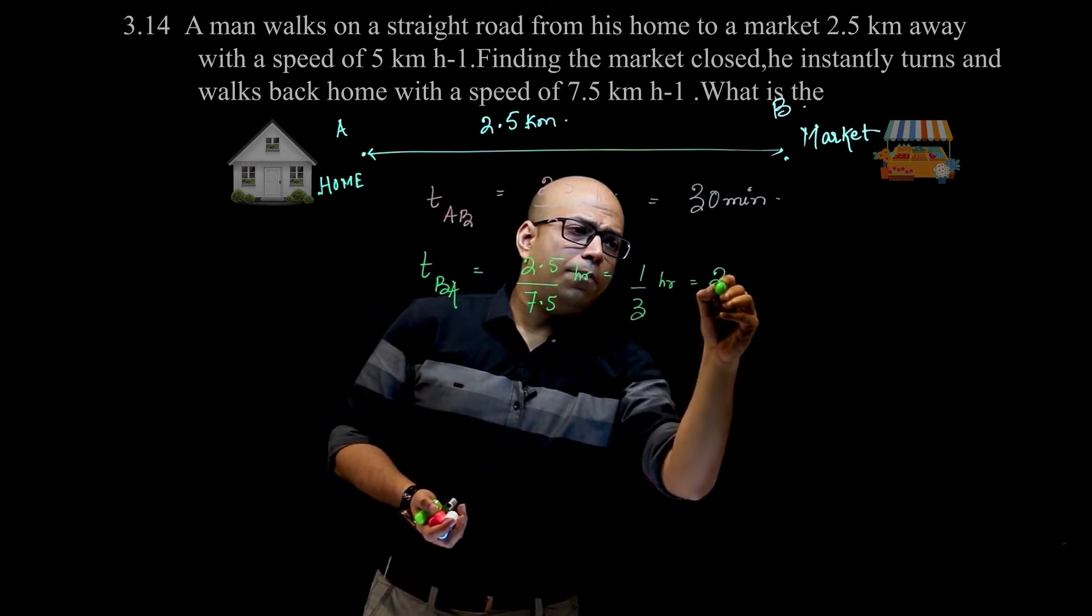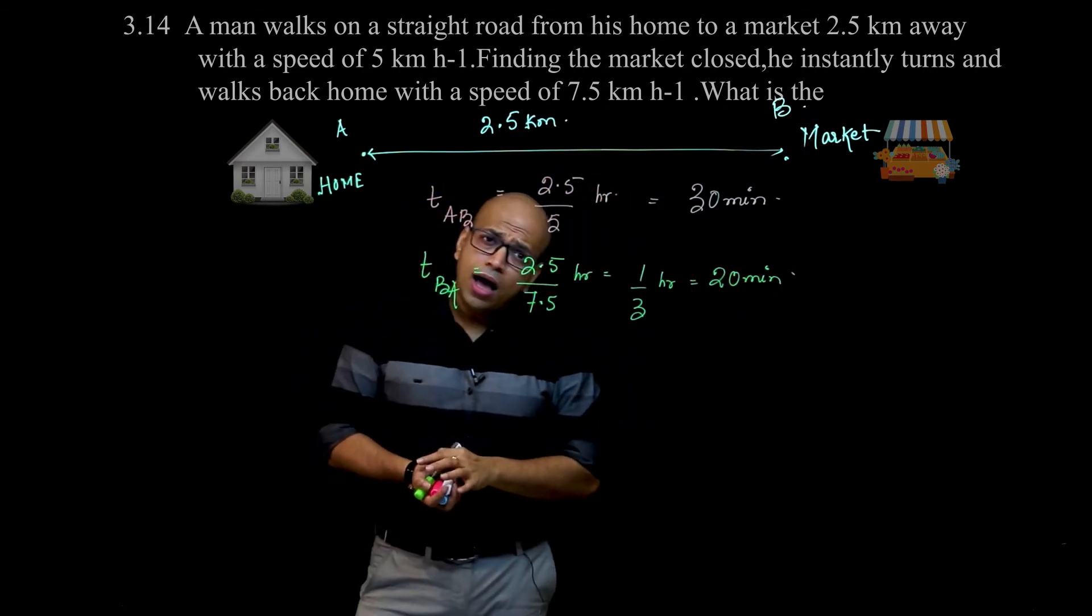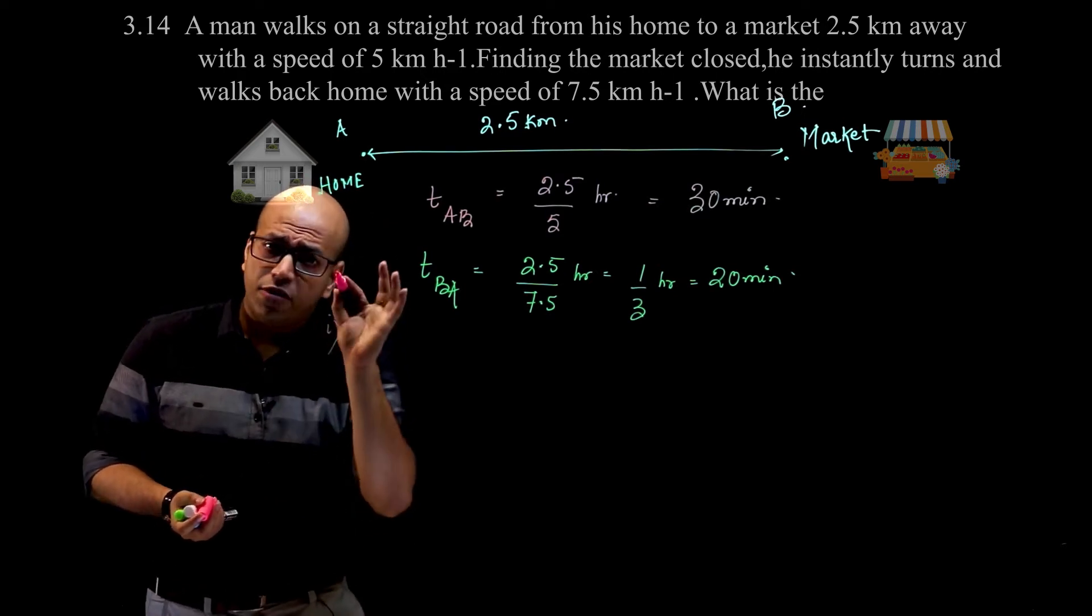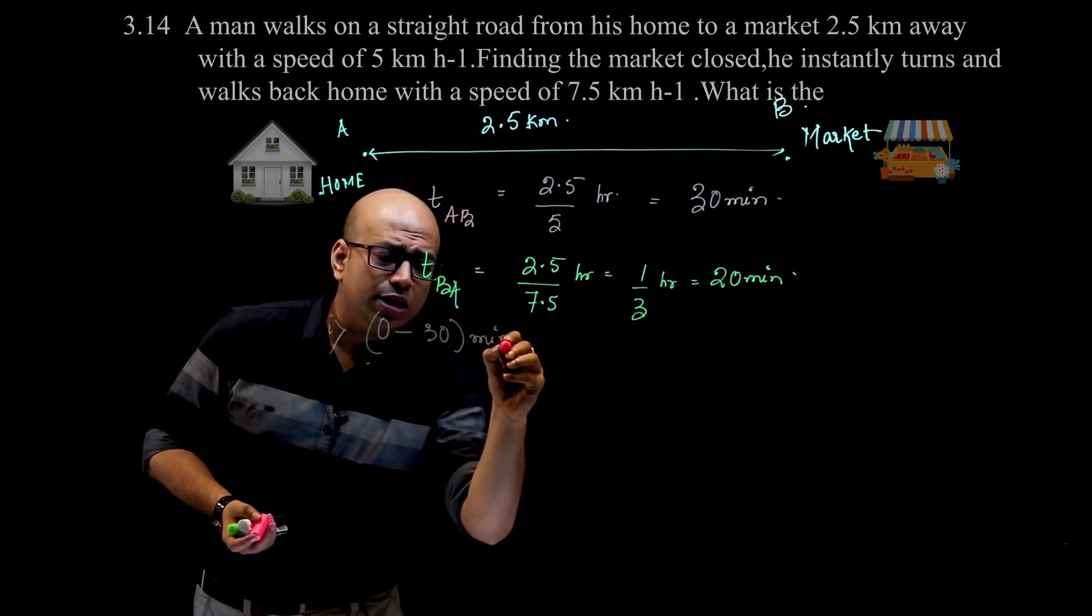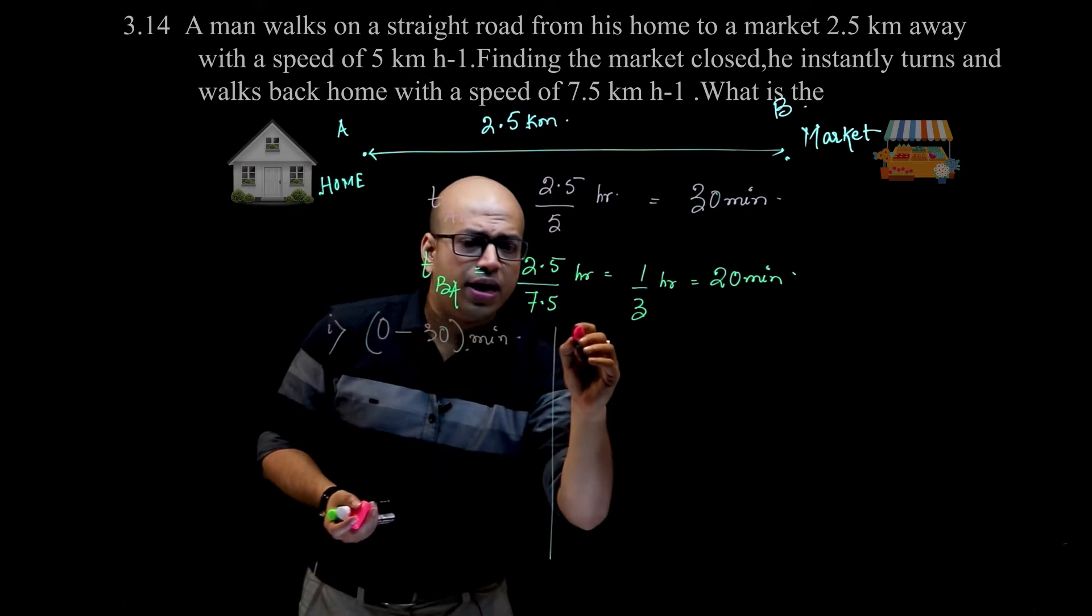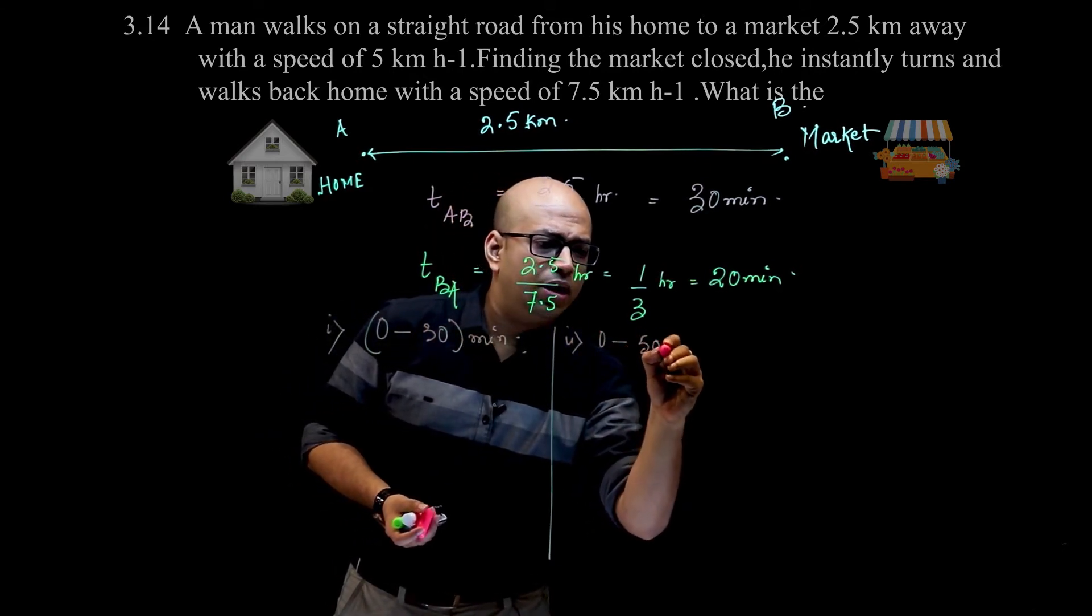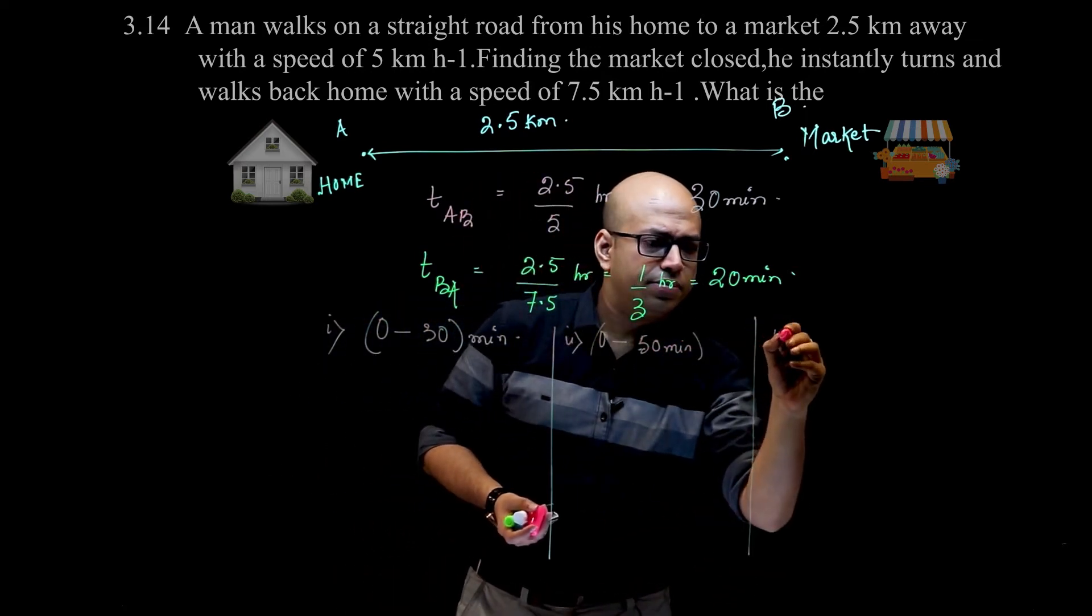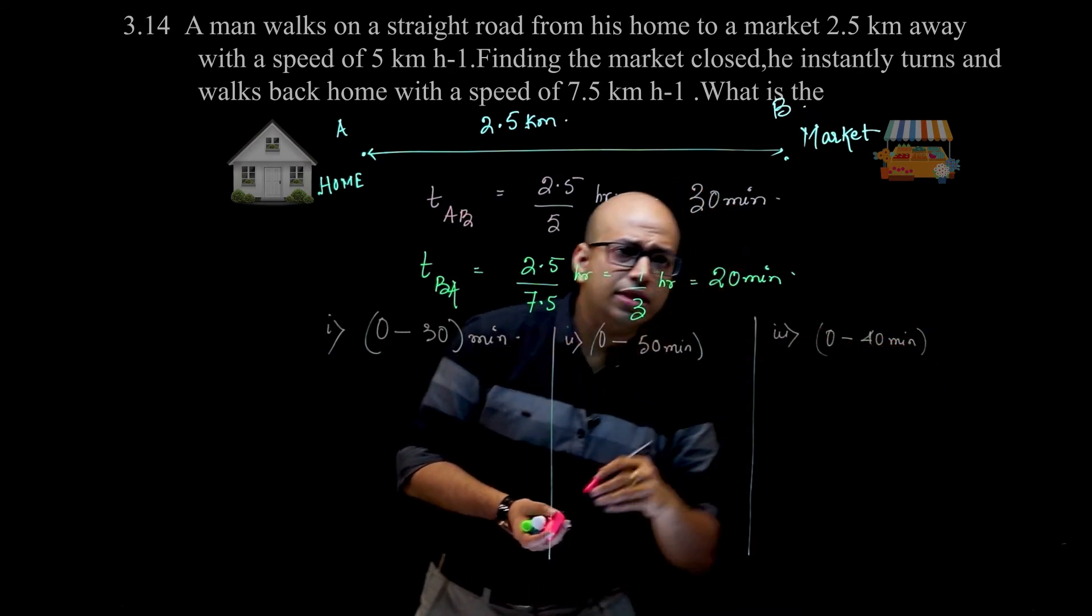So this means your first part is from 0 to 30 minutes. Now we have three cases: 0 to 30 minutes, 0 to 50 minutes - sorry, 0 to 40 minutes. All three cases need average velocity and average speed.